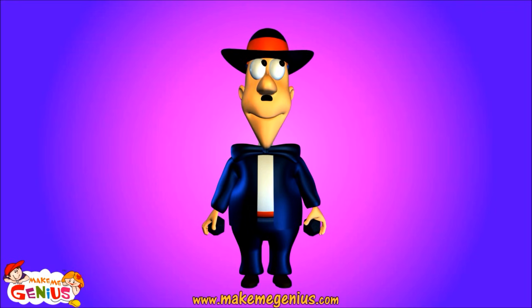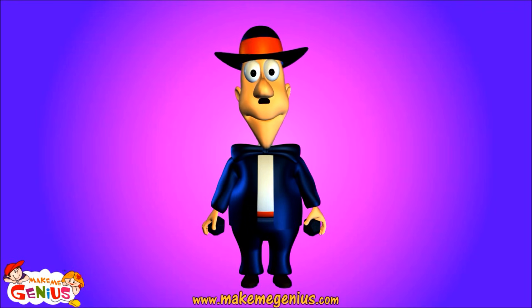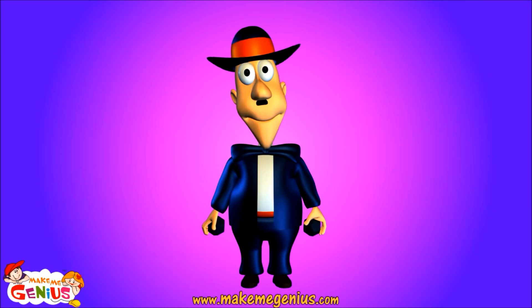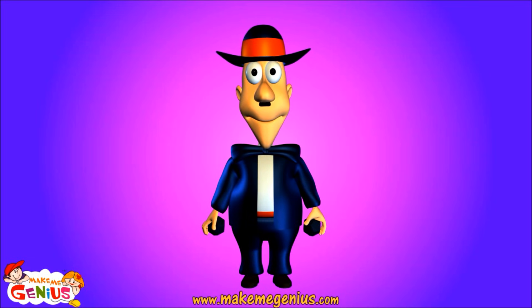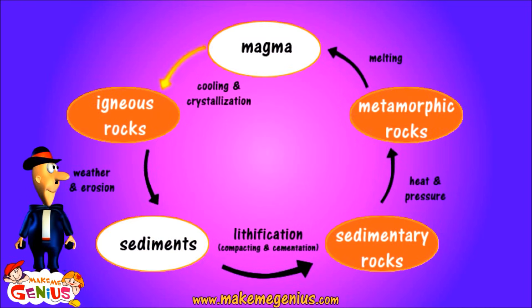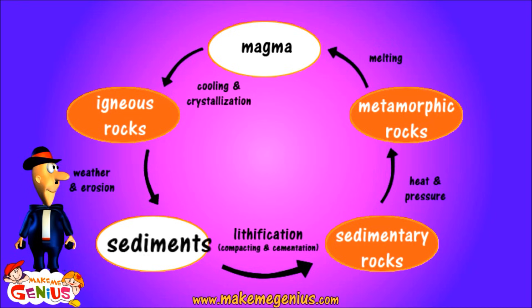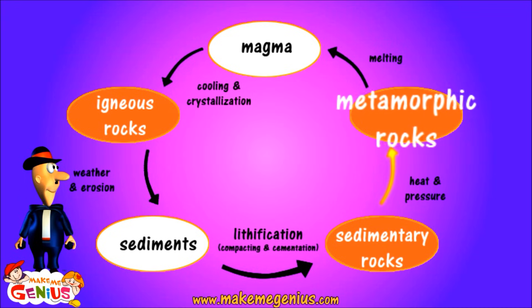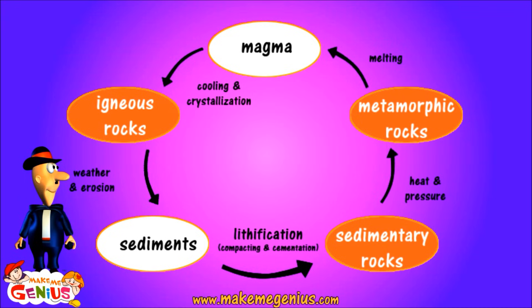So now you have become a rock star, but do you want to become a rocking rock star? You should know that rocks keep changing from one form to another. Magma changes into igneous rocks by melting and cooling. Igneous rocks break apart due to erosion and weather and turn into small sediments. These sediments get compressed due to pressure and form sedimentary rocks. These sedimentary rocks get changed into metamorphic rocks again by heat and pressure. These metamorphic rocks then change back into magma due to heat inside the earth. This way, the cycle continues.